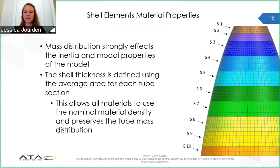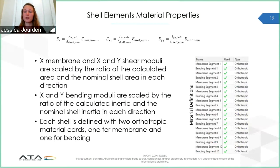It is very important for the finite element model to not only have the same overall mass as the original geometry, but it should also have close to the same mass distribution as possible to ensure accuracy. To preserve the mass distribution of the nozzle, the shell thickness for each section was adjusted so that the mass of the shell section equaled the mass of the corresponding slice of the 3D model when the nominal material density was used. To solve for the remaining elastic moduli, the stiffness of the shell was set equal to the stiffness of the tube in each direction. Each section is defined with two orthotropic material properties, one for membrane and one for bending, to account for bending and membrane stiffnesses in both the X and Y directions.